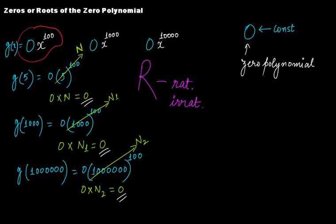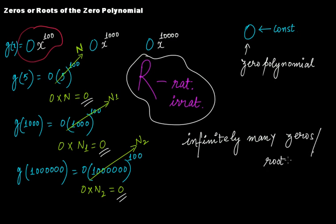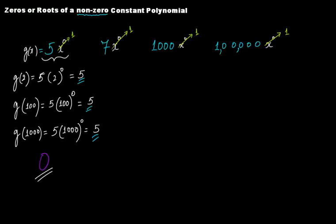That's why we say the zeros or roots of the zero polynomial is given by the set of real numbers — it can take infinite numbers, and therefore it has infinitely many zeros or roots. Remember, when we say zeros we talk about polynomials, and when we talk about roots we talk about polynomial equations, as discussed in our previous video. So in the case of the zero polynomial, you have infinitely many zeros or roots. In the case of a non-zero constant polynomial, you don't have any roots or zeros.